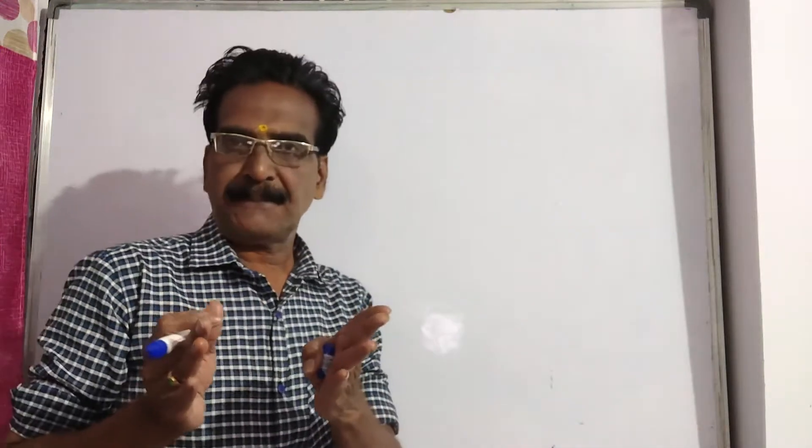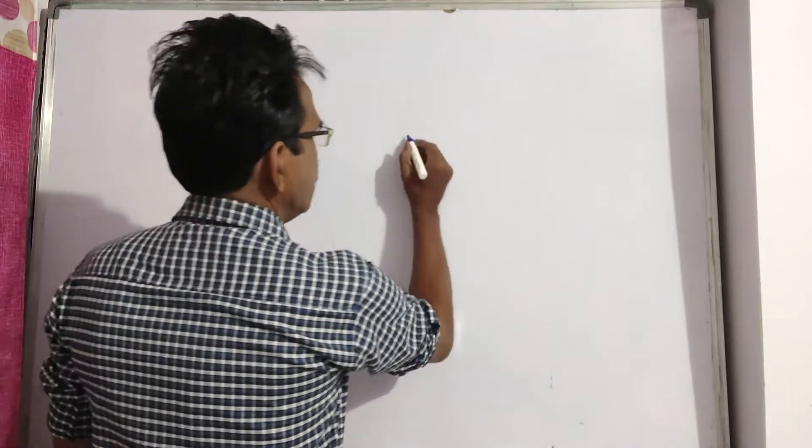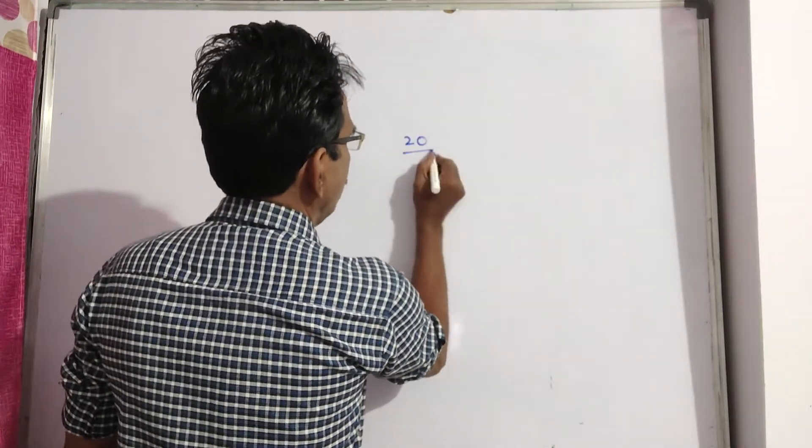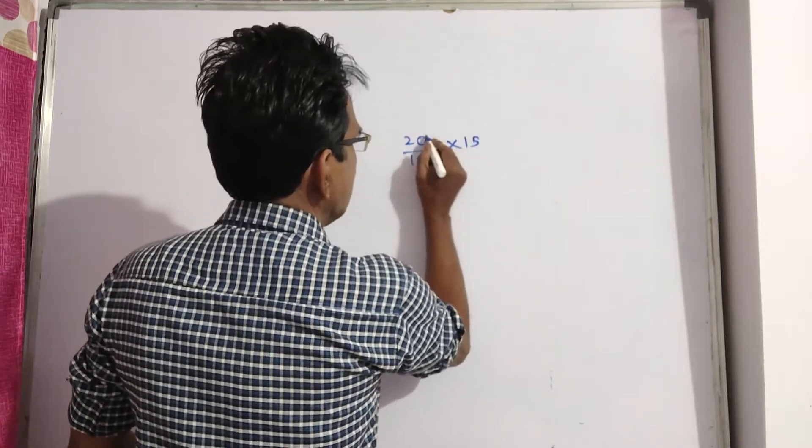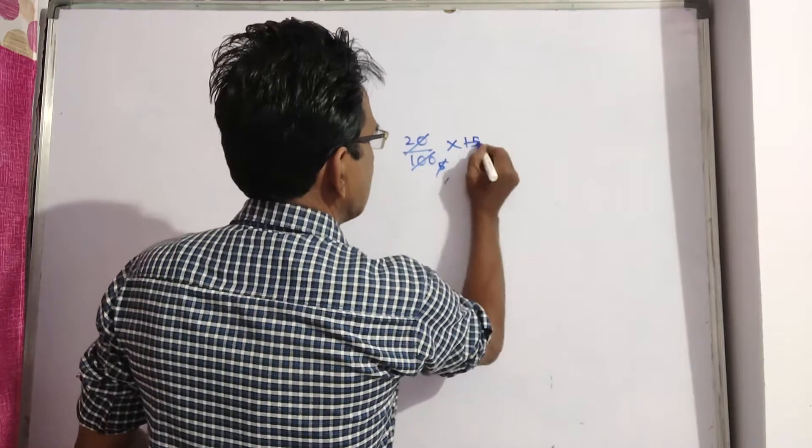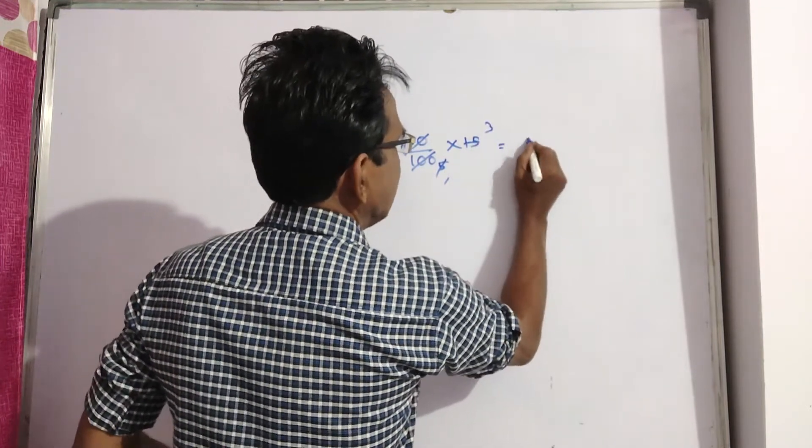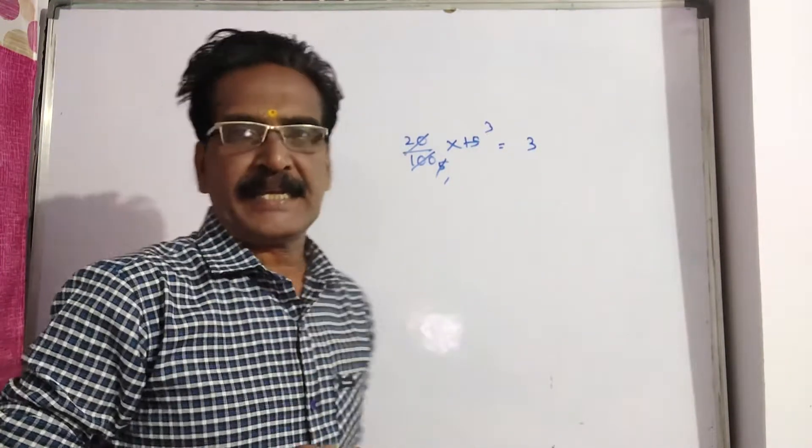The price is reduced by 20 percent. What is 20 percent of 15 rupees? 15 by 25, five threes. So the price is reduced by 3 rupees.